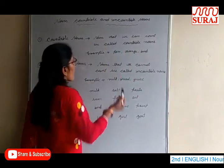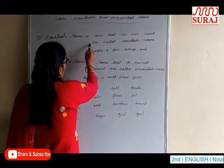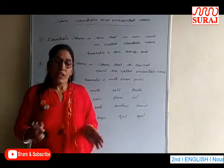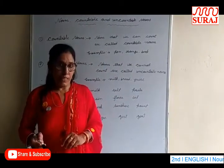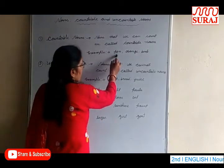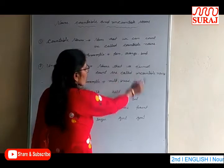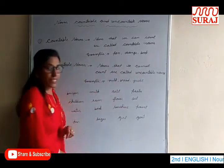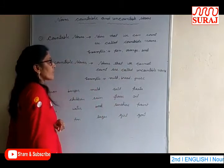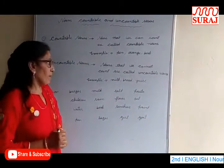Which nouns can we count? In English, the nouns which we can count are called countable nouns. For example: pen — can we count pen? Orange — can we count orange? Book — can we count book? Yes, these are all countable nouns.